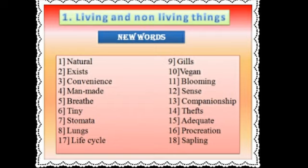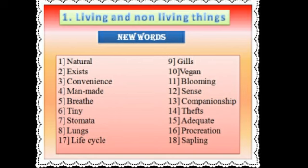Now the words meaning section. First one: natural — obtained from nature. Second one: photosynthesis — the process by which green plants use sunlight to form nutrients, meaning the process where plants prepare their food.